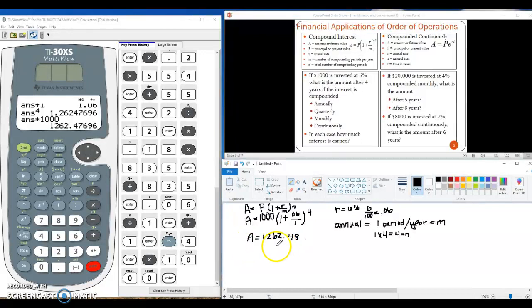Of that amount, 1000 was invested. So if I subtract out that principal, I get that there were $262.48 worth of interest.